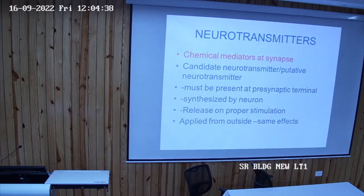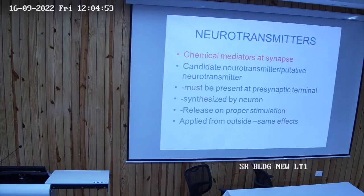A neuron may be a pre-synaptic neuron or a post-synaptic neuron. During the process of excitation, various chemicals are released — many are released. Some are even gases. So which substance is to be called a neurotransmitter? There are certain criteria prescribed by scientists for chemicals to be considered as neurotransmitters.